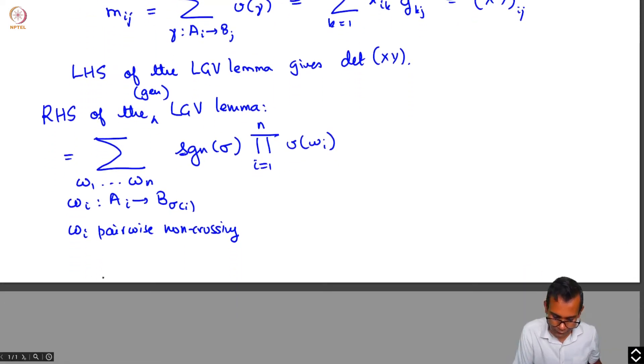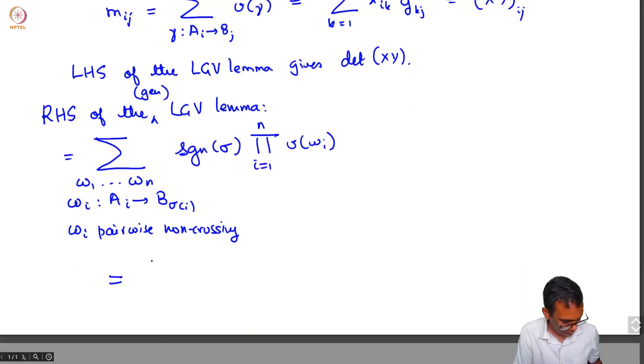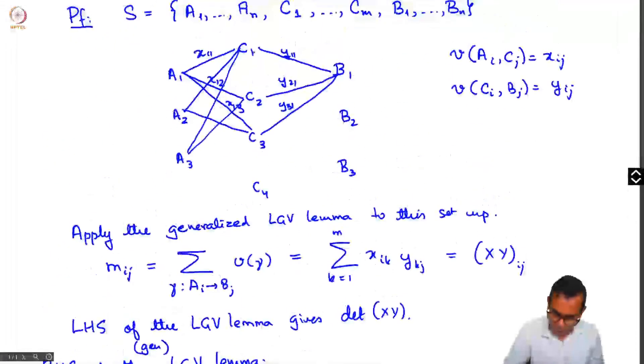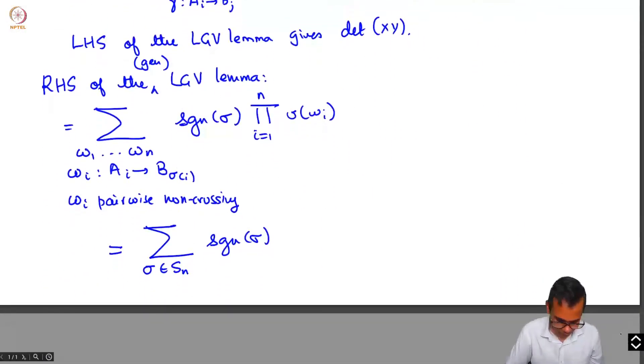And then we have sign of sigma times product i goes from 1 to n, weight of omega i. We can write this as sum over sigma in Sn, sign sigma, and then let's look at the path. Each path must go through some one of the c points, one of these points in the middle column.